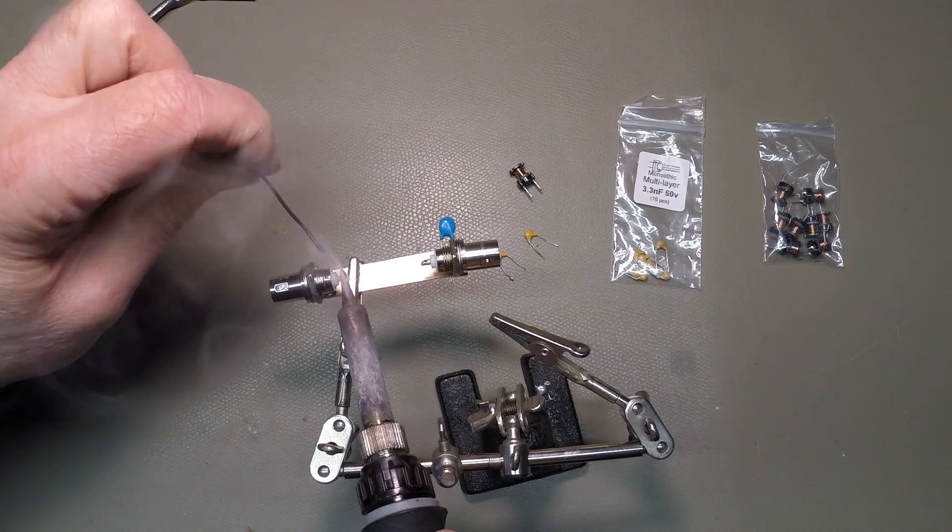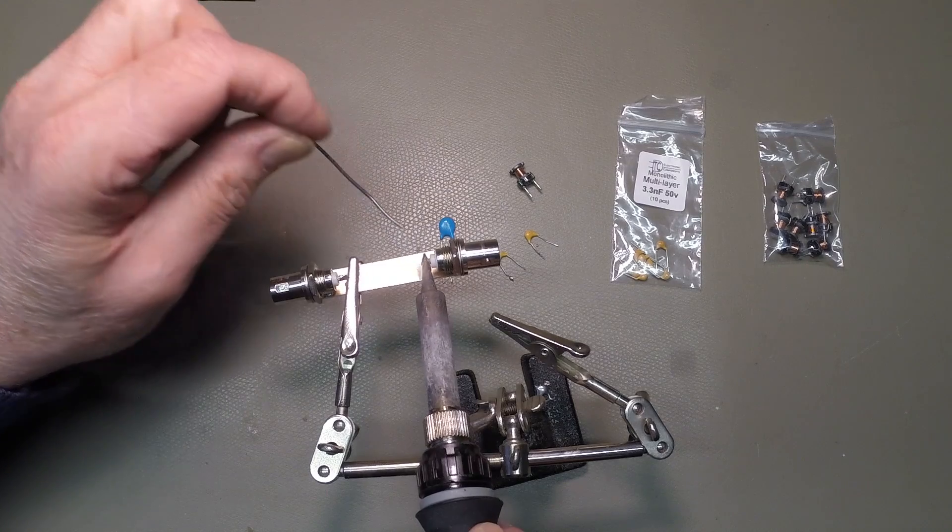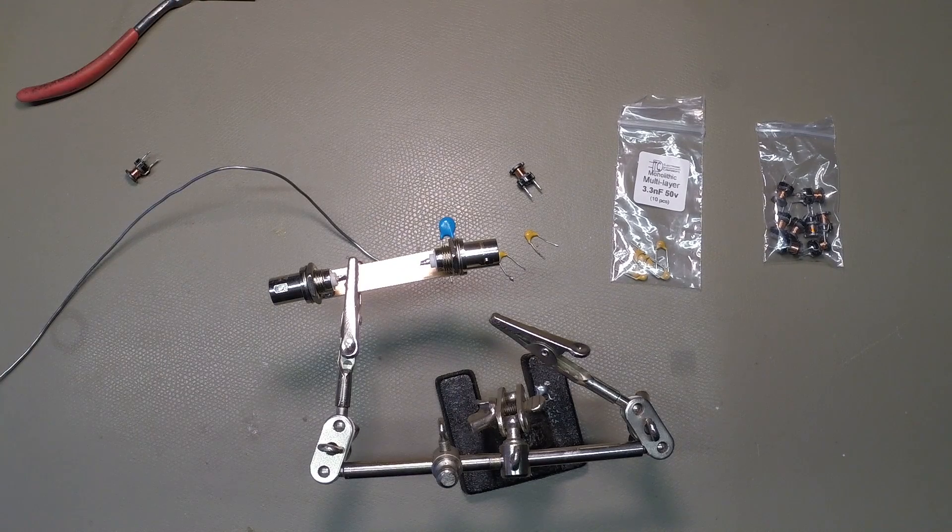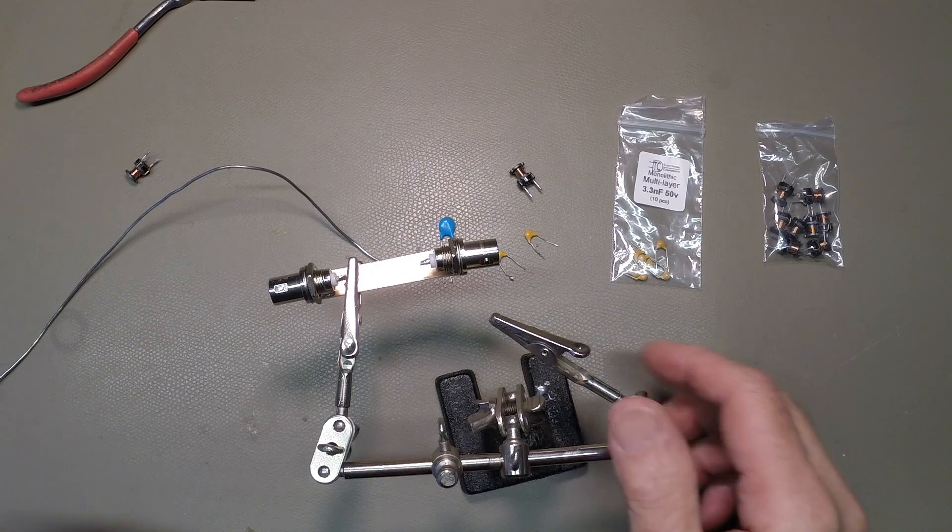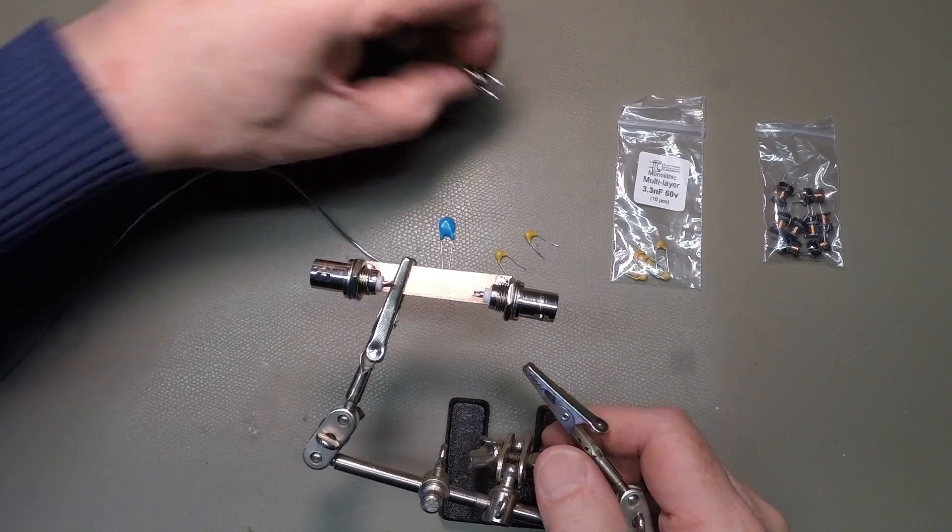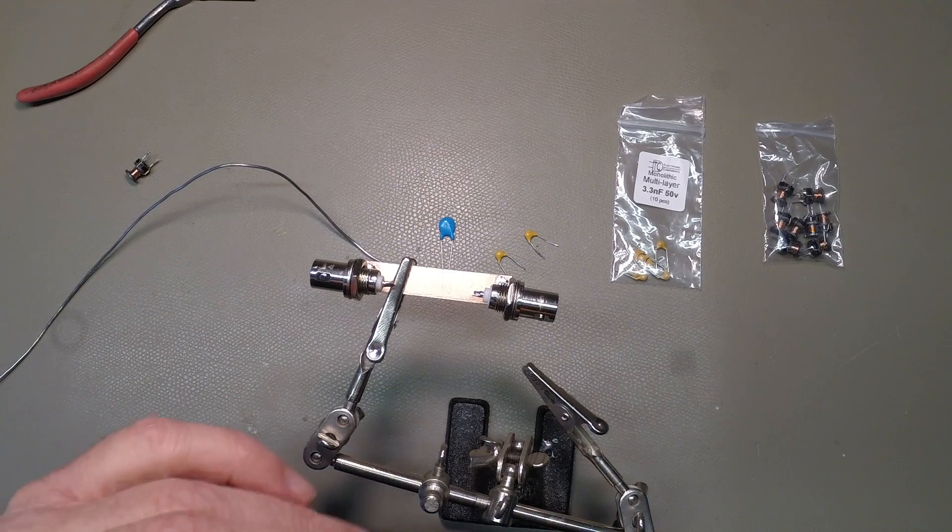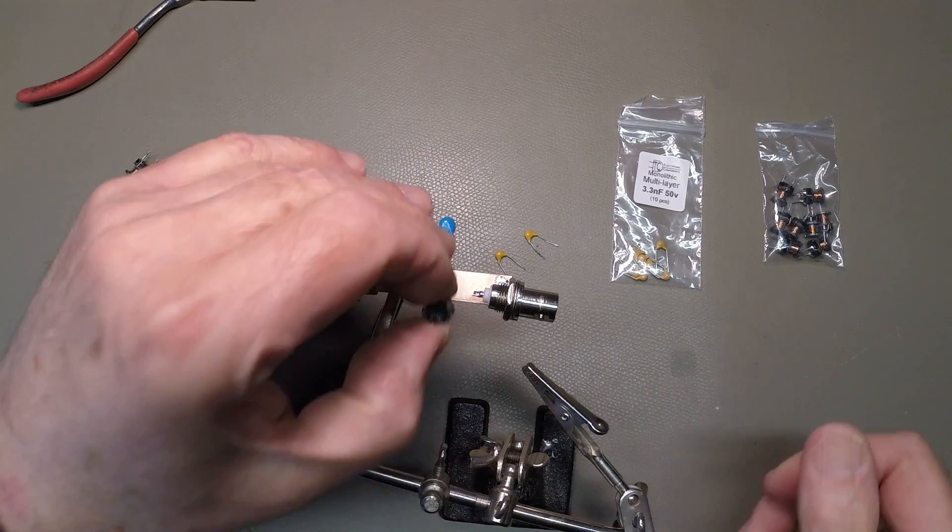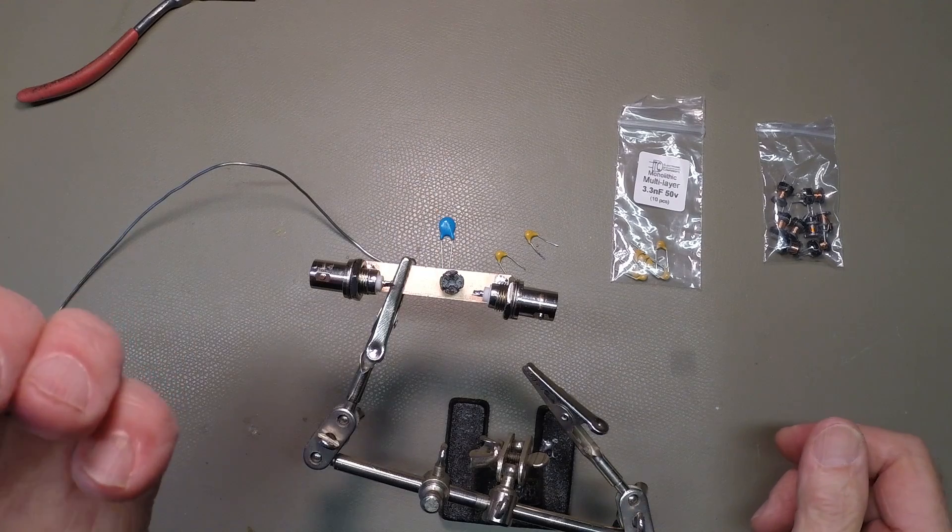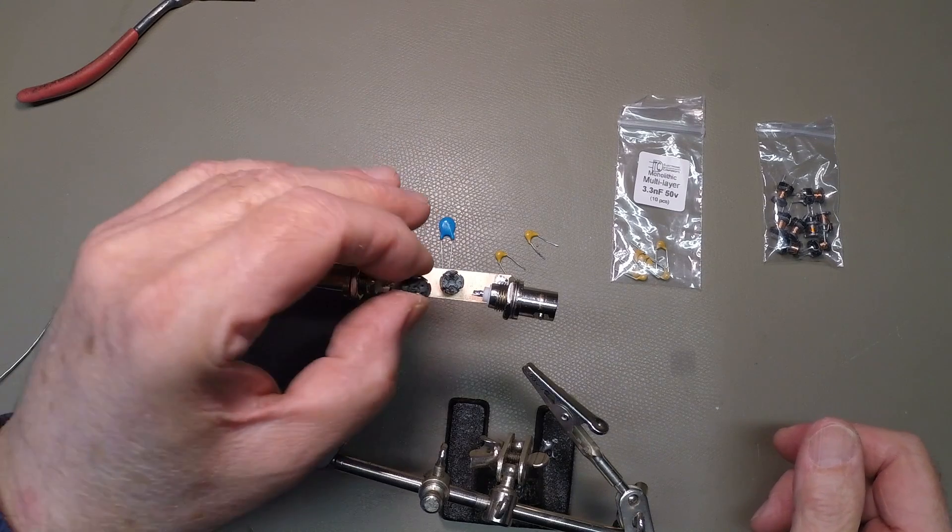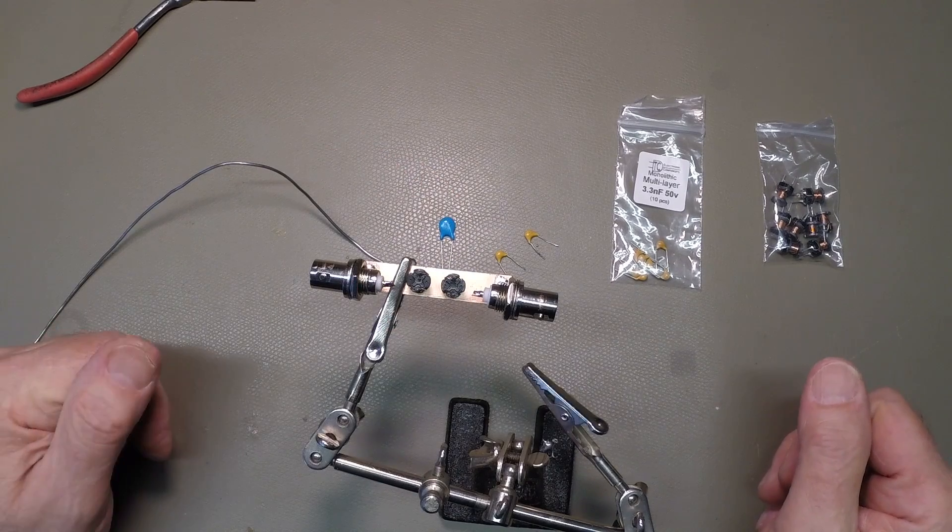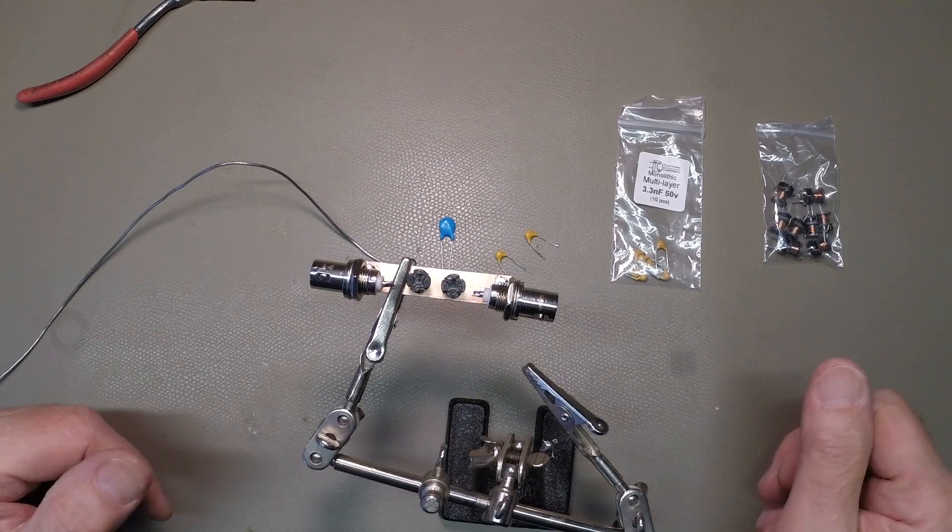I'm just going to tidy up the hot connections of the BNC socket, because we'll be needing those shortly. And now, the decision is whether or not to simply place these inductors on the copper substrate, maybe with a spot of superglue, and then wire between them. That's probably what I'll do.